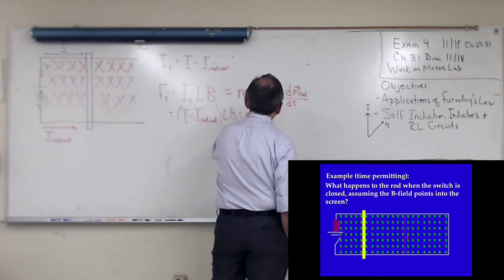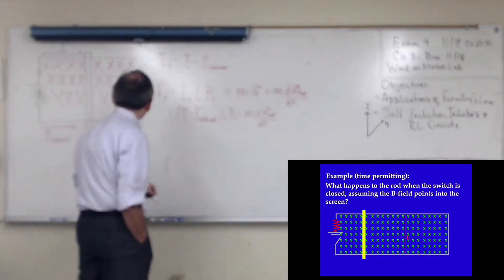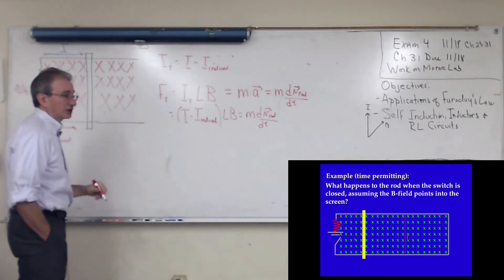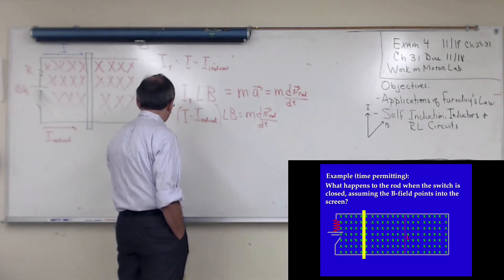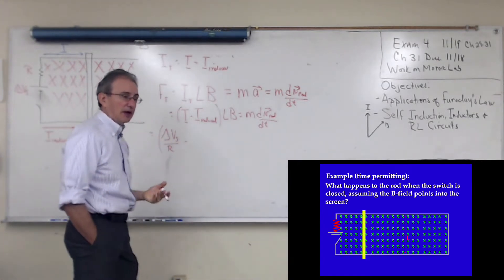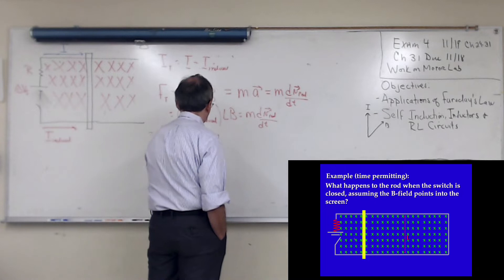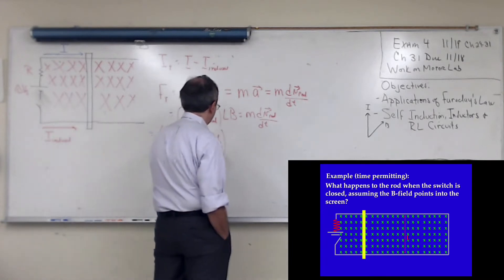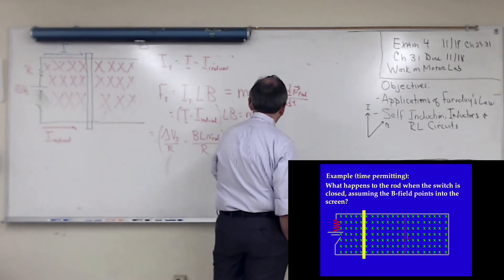The other day we did the problem without the power supply — we just gave the rod a shove and derived V as a function of T. Now we have a power supply, so the equation is similar but not exactly the same. My total force is the difference of the two currents, and this equals M·dV_rod/dt. Calling the power supply voltage ΔV_s and the circuit resistance R, the first term is ΔV_s/R and the second term is the induced EMF, which is BLV_rod/R.